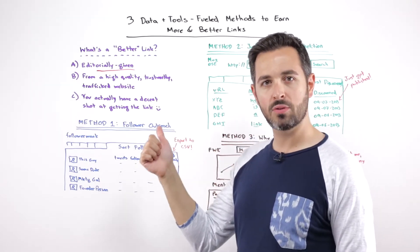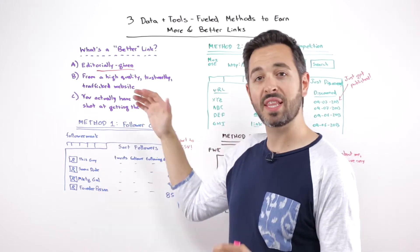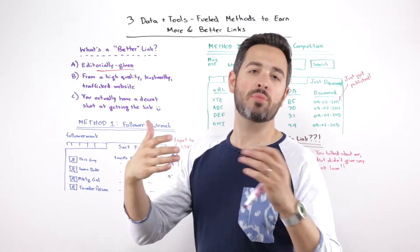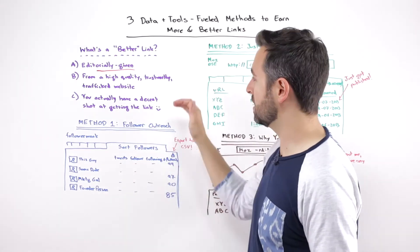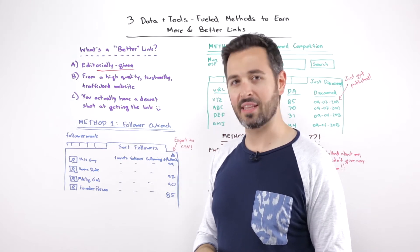B, from a high-quality, trusted, and well-trafficked website, something that actually might get you clicks in addition to providing link value from a search ranking perspective. And C, you've actually got a half-decent shot at getting that link.